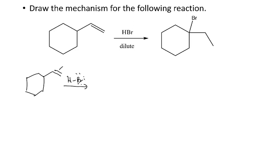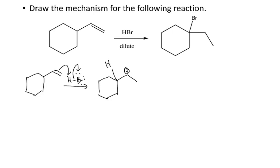My first step is the pi bond attacking the hydrogen, and the hydrogen is going to add to this carbon. The carbocation is going to go here. Now this carbon only has three bonds showing, so there must be a hydrogen on there.